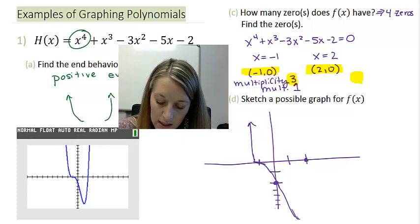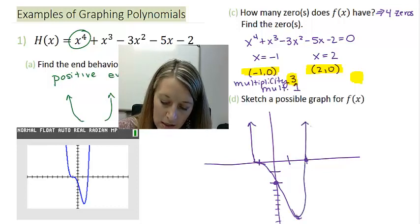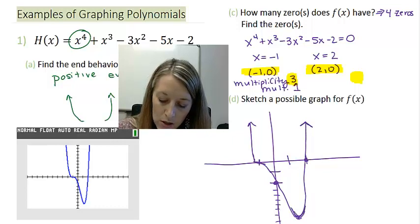So mimicking the sketch of a graph on our calculator, we said that it plateaus at negative 1. And then it has a minimum value down here at negative 9. 1, 2, 3, 4, 5, 6, 7, 8, 9. And then it comes back up and it crosses my x-axis here to hit my end behavior of going up on both directions.